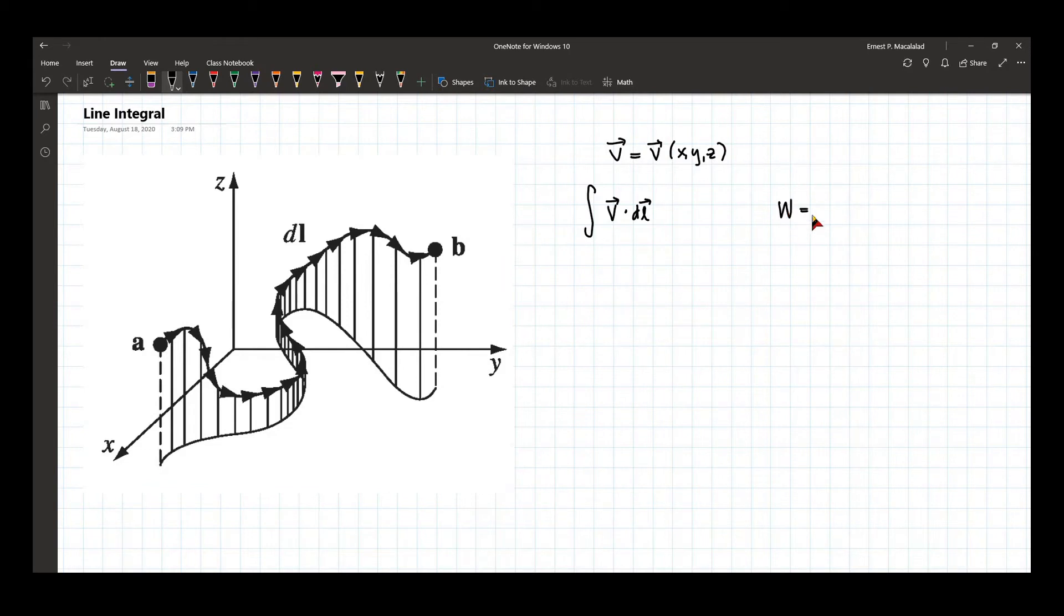Work done by a varying force is given by the integral of the force exerted on the particle, dotted with the infinitesimal displacement vector, and we integrate it between two points a and b which constitute the whole displacement of the particle.